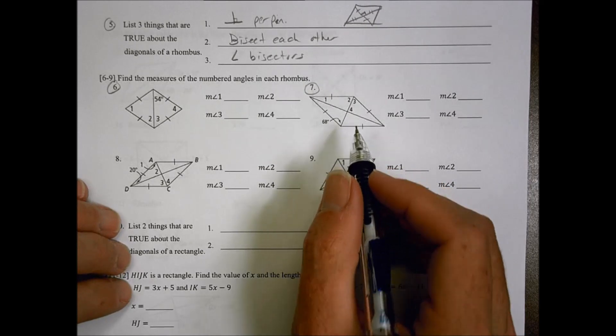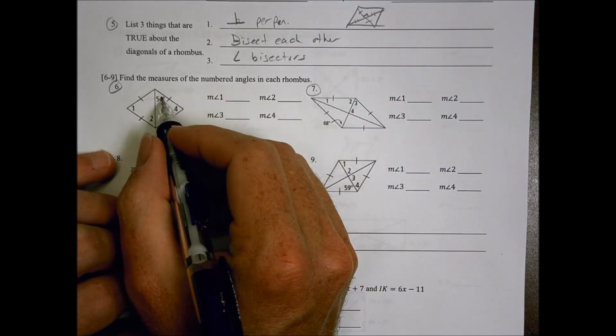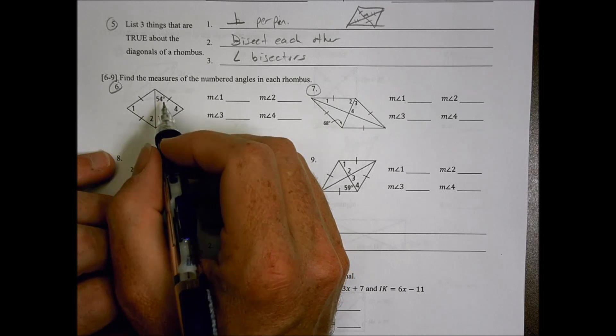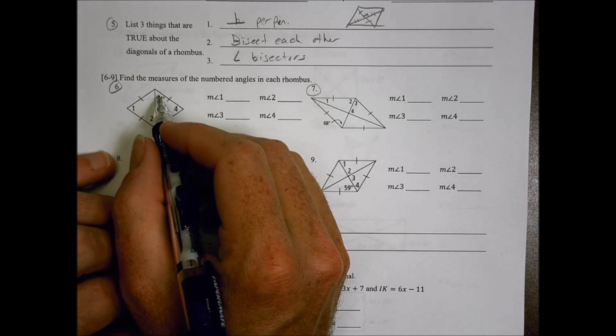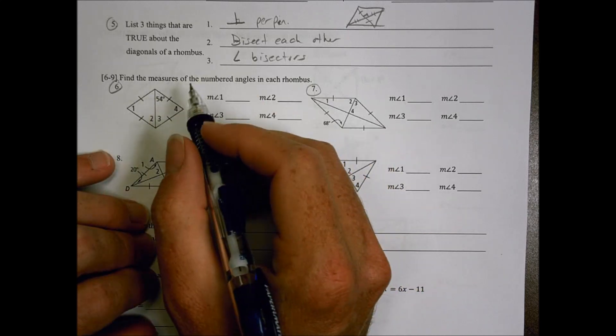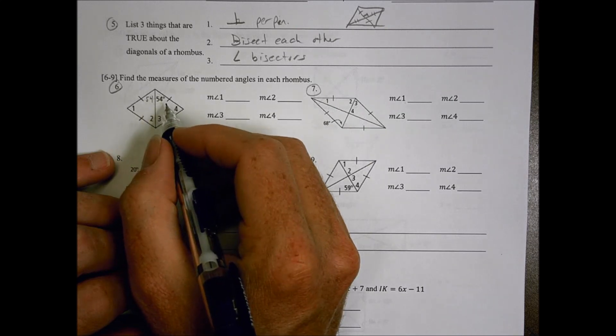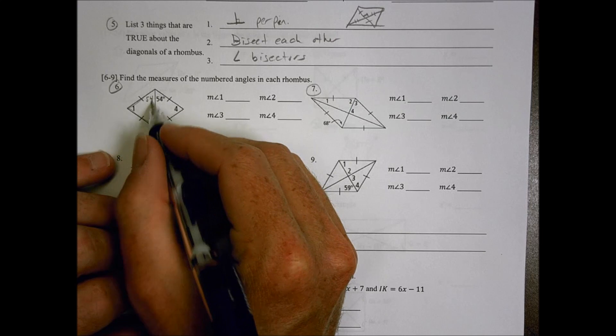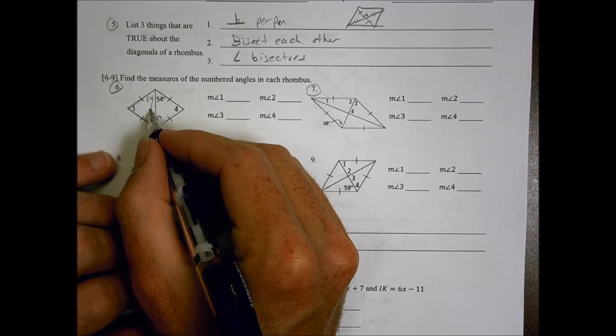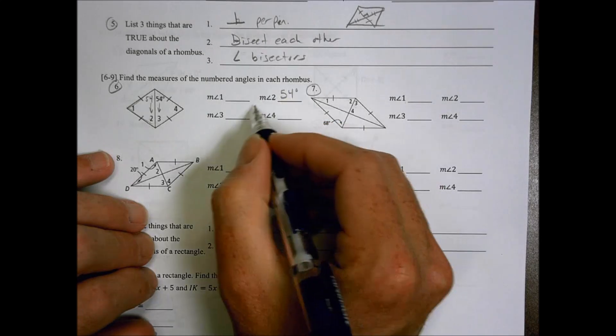Alright, so here we go, number 6 first off. So 54 is going to be up here. We know that if that's a 54 and that's a 54, we can say that safely. This angle measurement right here would also be 54 degrees. Now because this is an isosceles triangle like this, the bases are going to be equal, which means that angle 2 and angle 3 would also be 54 degrees.